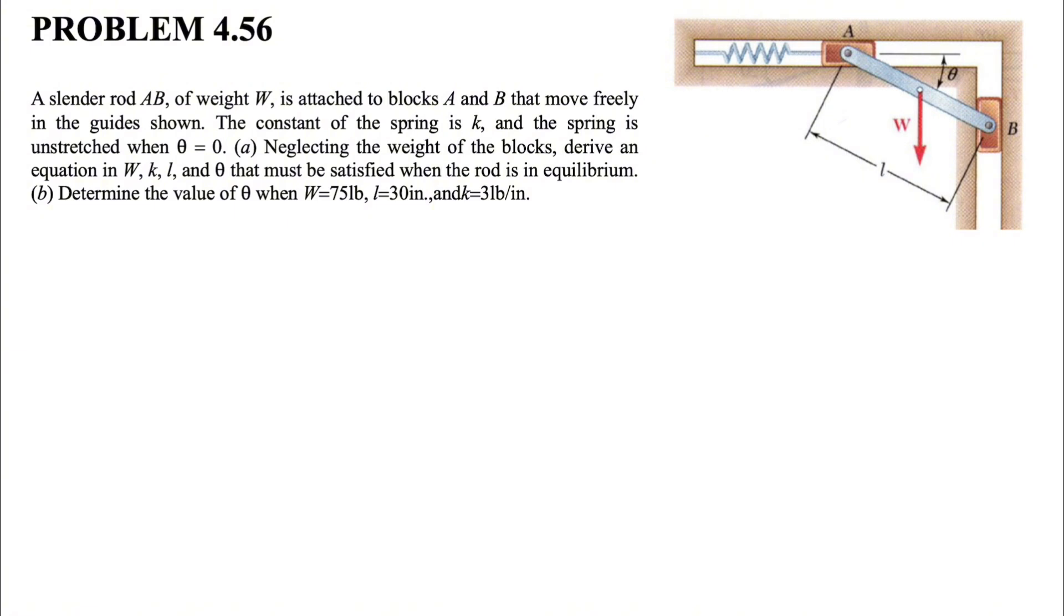We have this slender rod AB with the weight of W, which is attached to two blocks A and B that can move freely in the guides. The constant of the spring is K, and the spring is unstretched when theta equals zero. In part A of the question, neglecting the weight of the blocks, we need to derive an equation in W, K, and L, and theta that must be satisfied when the rod is in equilibrium.